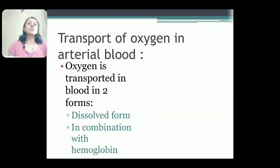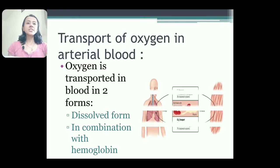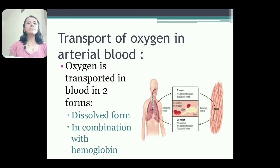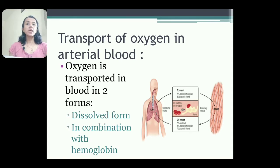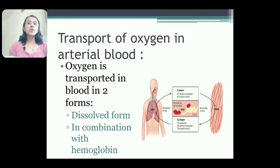Transport of oxygen in the arterial blood: oxygen is transported in mainly two forms. One, that is dissolved form — only 3%. And second, that is oxyhemoglobin form, in combination with hemoglobin, which is 97%.